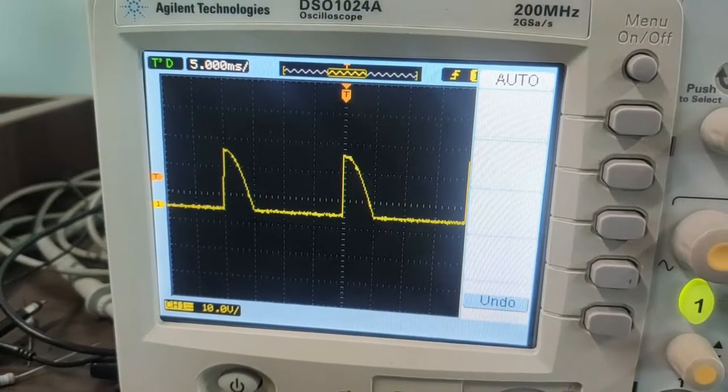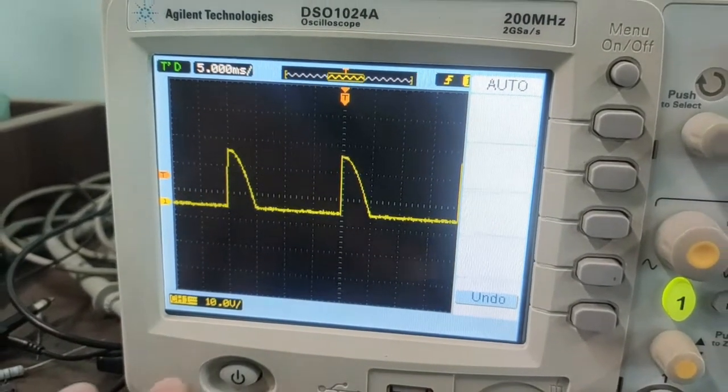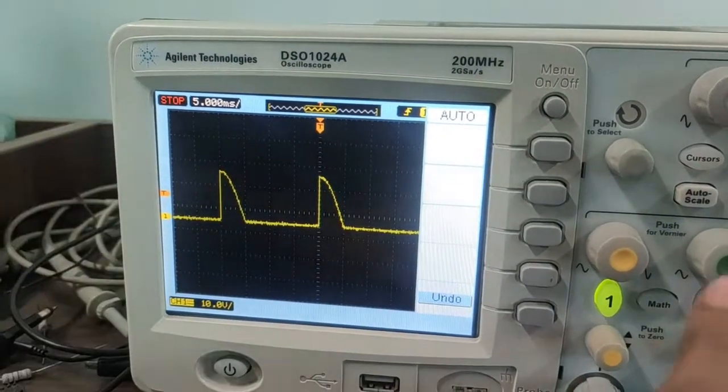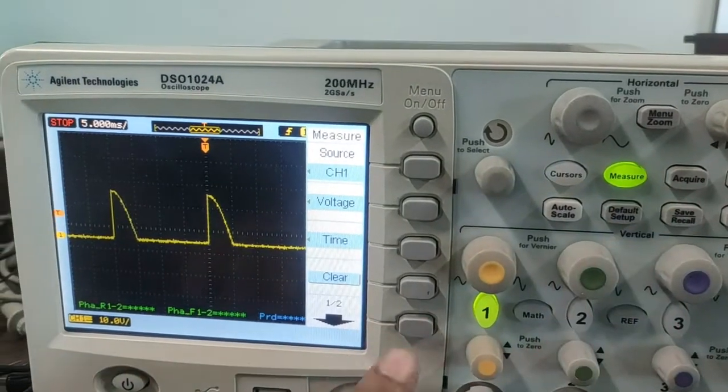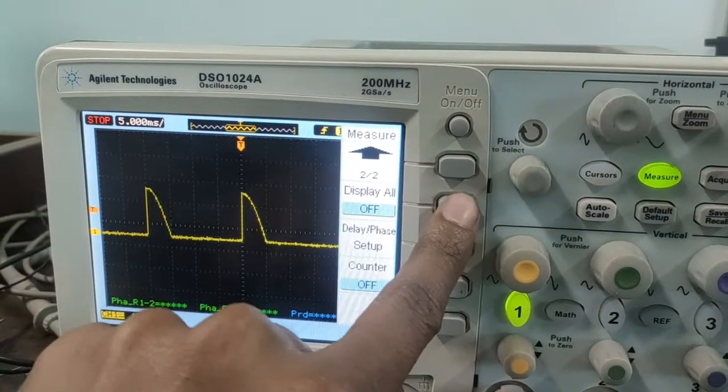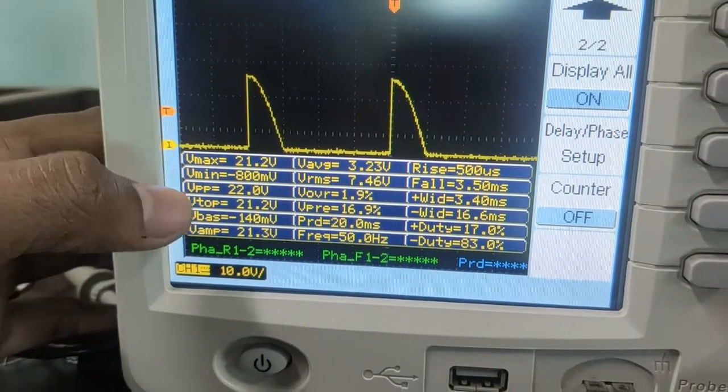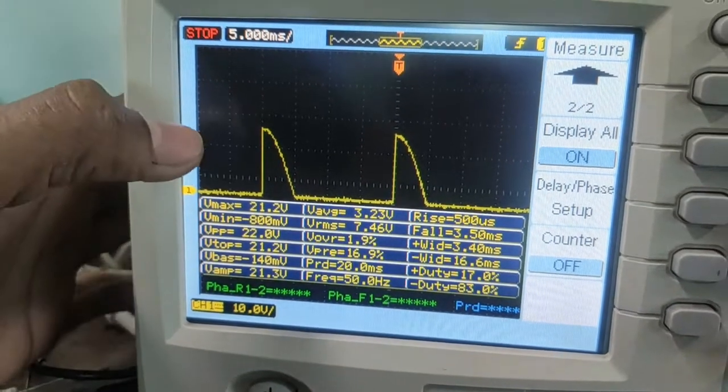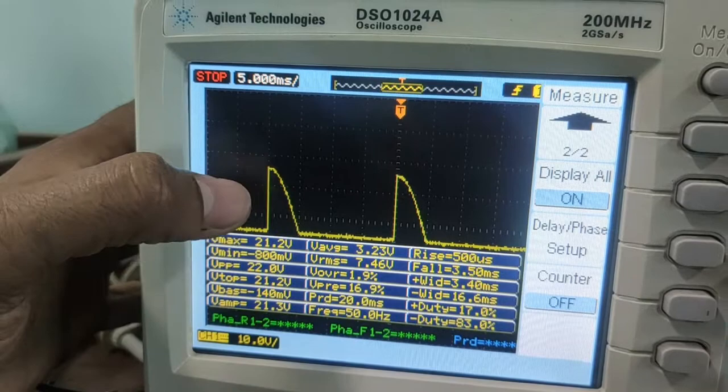So, this is the real output at load resistance. Stop button. Now, go to the measure. Then, turn on display. These are the readings. Vmax, Vmin, Vpp. You can note down this reading from here. Also, you can trace this output waveform from here.